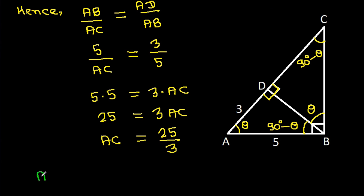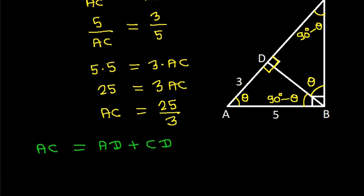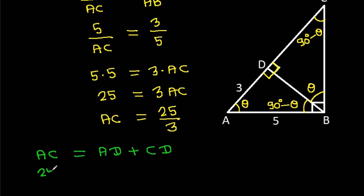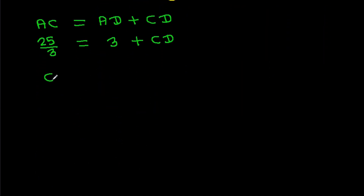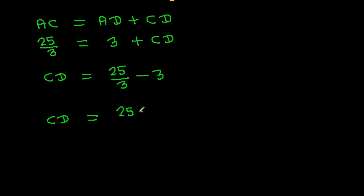So AC is equal to AD plus CD. AC is 25 by 3, and AC equals AD plus CD, so CD equals AC minus AD, which is 25 by 3 minus 3. CD equals 25 minus 9 by 3, which is 16 by 3.